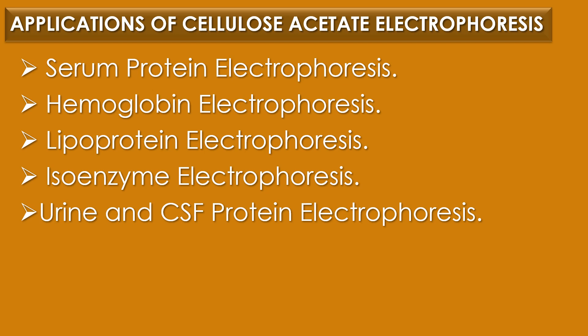The fourth application is isoenzyme electrophoresis. Cellulose acetate electrophoresis can differentiate isoenzymes, aiding in the diagnosis of certain diseases like liver or heart disorders. The fifth and final application is urine and cerebrospinal fluid protein electrophoresis, which can detect and analyze proteins present in urine or cerebrospinal fluid to help diagnose multiple sclerosis, renal diseases, and other neurological disorders.